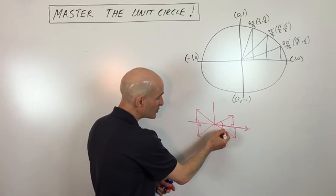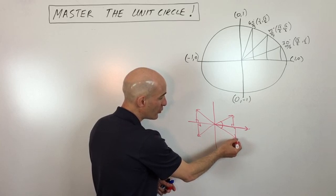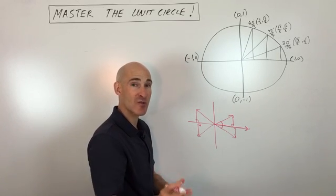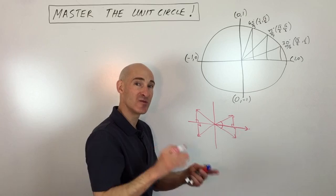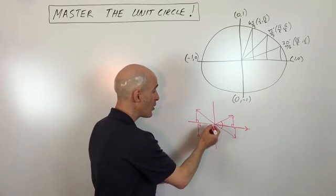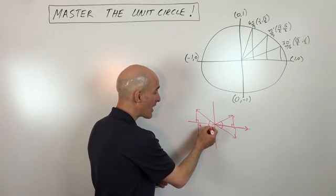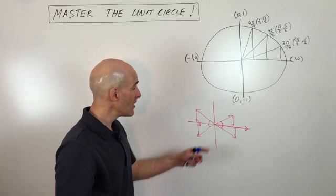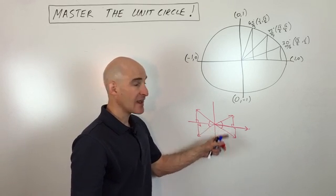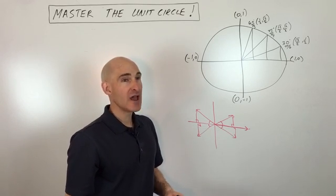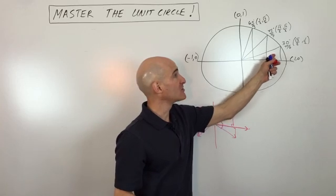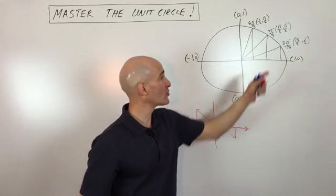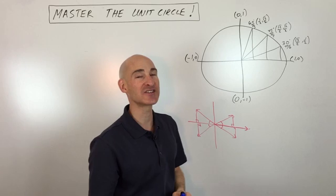The angle formed between the terminal ray and the x-axis is called a reference angle. It's always going to be positive, and it's always going to be between 0 and 90 degrees — or 0 and pi over 2 if you're working in radians. You find that angle and then refer back to the 30, 45, and 60-degree points on the circle in the first quadrant that we've already memorized.